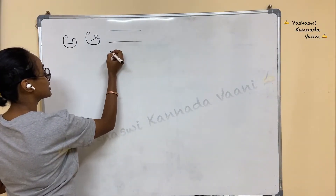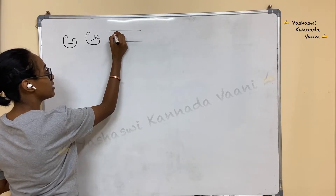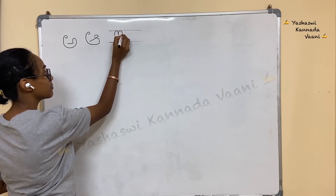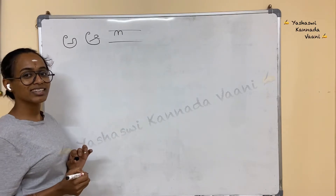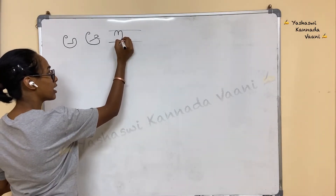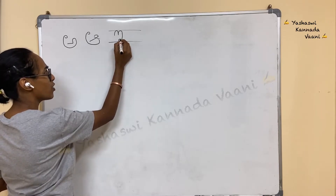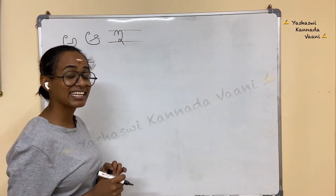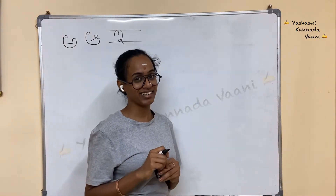So the next letter is E (ಇ). How to write E? Remember letter 3 — what if the letter 3 is sleeping upside down like this? Come down completely. Put in the line. Now put a small knot. This is letter E (ಇ). Illi — Illi is a rat.